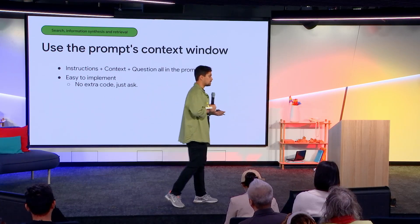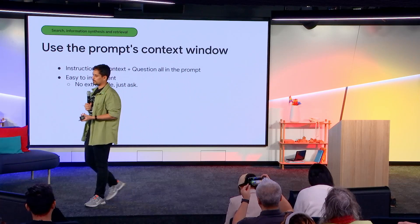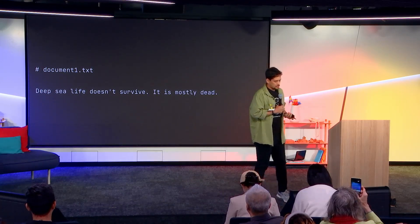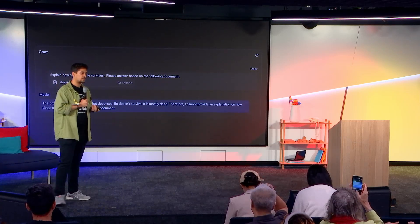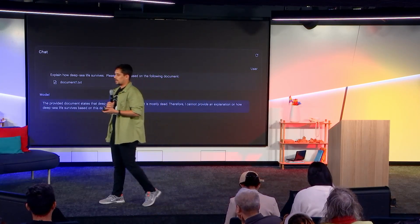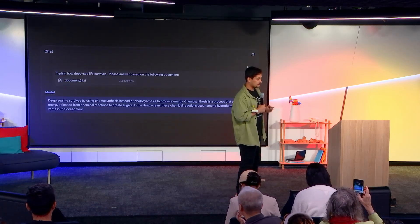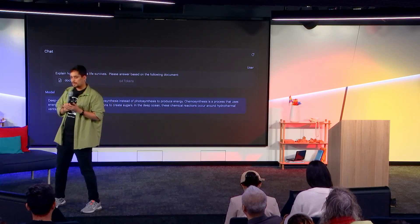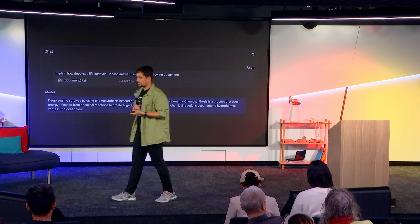We use the prompt's context window in Gemini's case to provide more data to it. In AI Studio you just have to upload a file or image. As a quick example, I provided a document to Gemini and asked a prompt based on it — the question was 'explain how deep sea life survives,' with the instruction to please base your answer on this document. It considers that as the truth, ignores everything it knows, and responds accordingly. If I give it a different document, it'll give an answer based on that instead, trusting your data — which makes it powerful but also scary, because you can spread misinformation. You have to be careful with it.